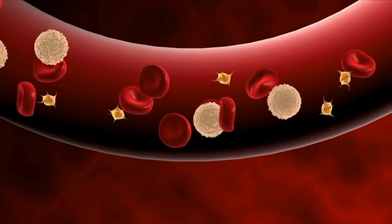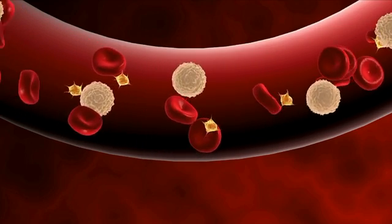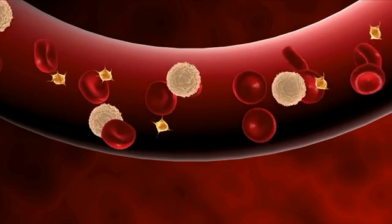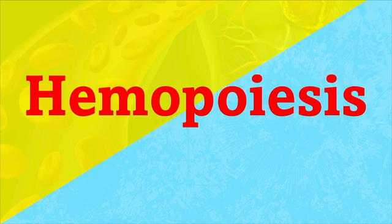In the blood, we have red blood cells, white blood cells, and platelets. These all serve specific functions and are absolutely necessary to sustain our lives. These cells all need to be made, and the process for making blood cells is called hemopoiesis. Let's dig into it further.